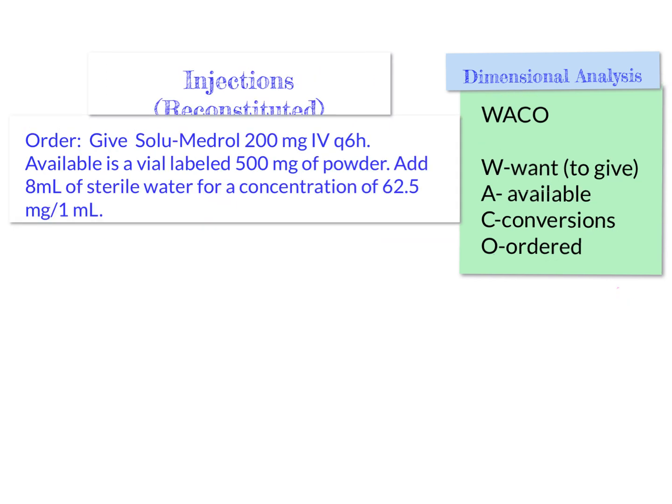Now let's look at injections that are reconstituted. That means we have a powder medication that we mix something with, shake it up so it becomes a liquid, and we can inject it as an IM injection or IV infusion. We need to figure out which information in the problem we need and which we don't. Let's take a look at this example with solumedrol. The order is to give solumedrol 200 milligrams IV every 6 hours.